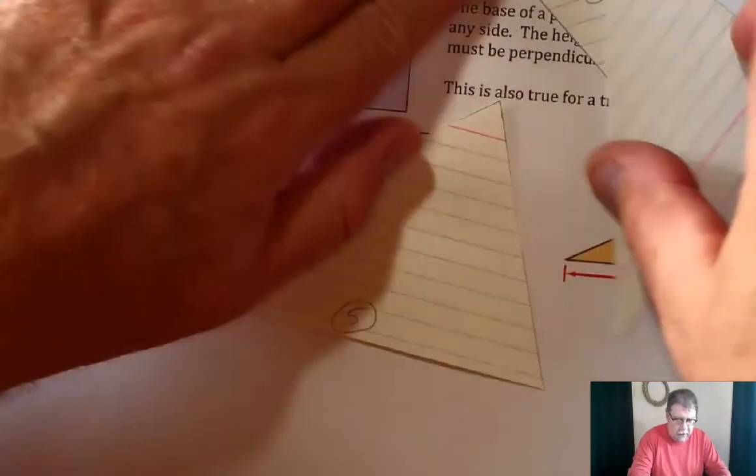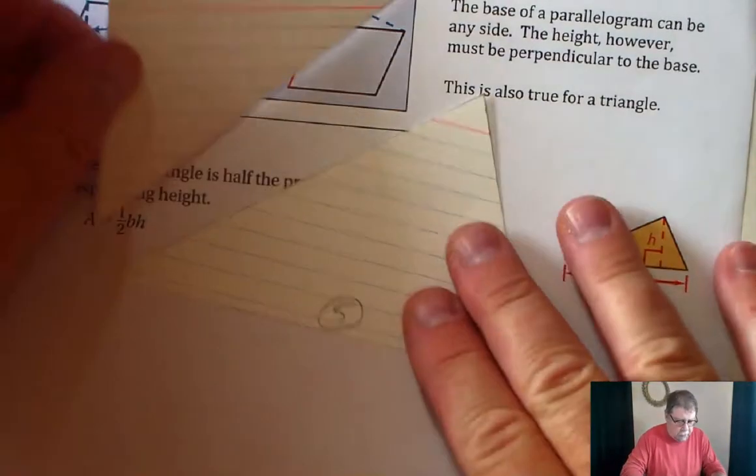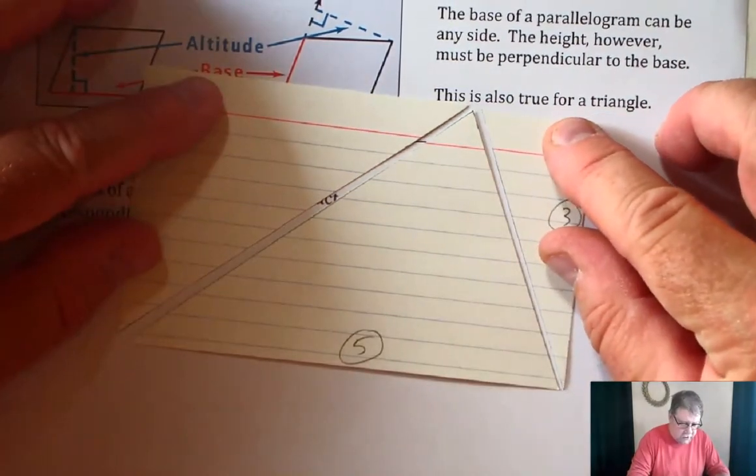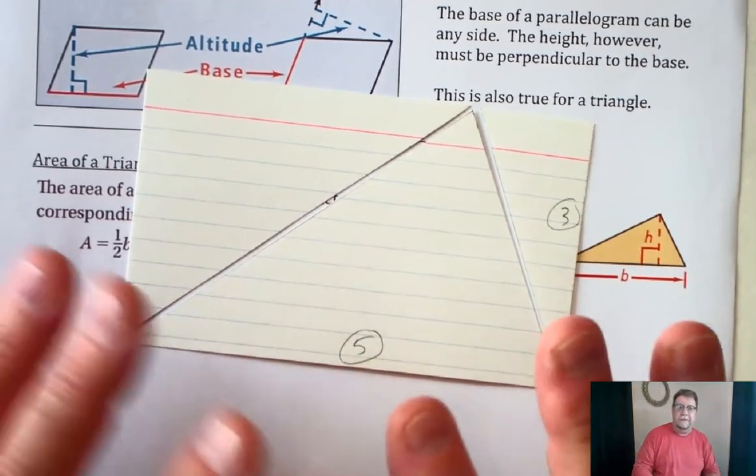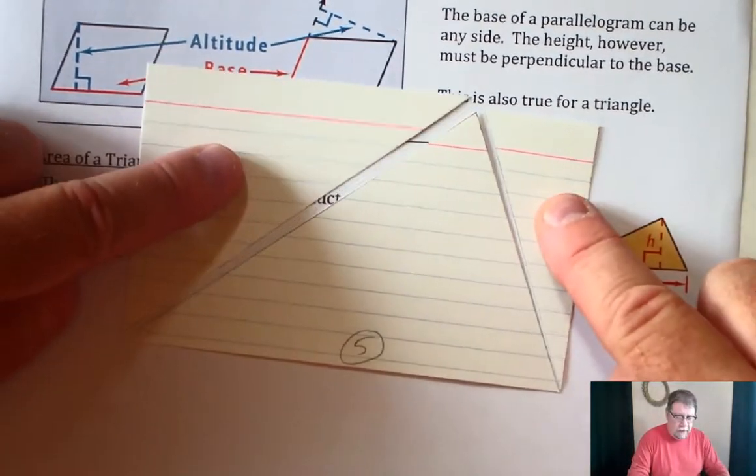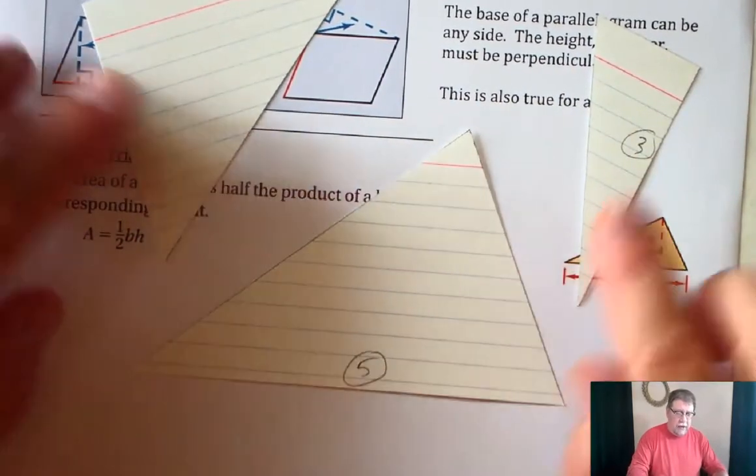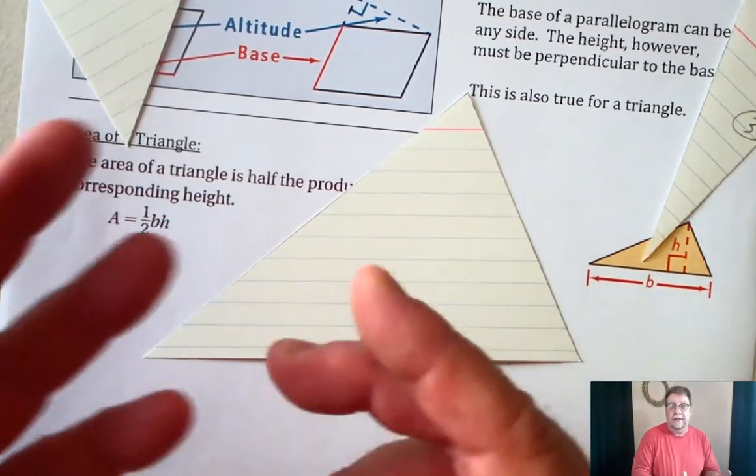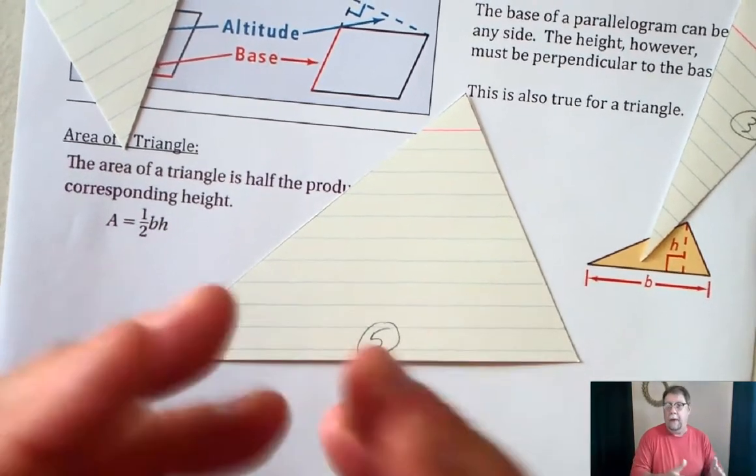So I now have, here's the card. Let me put the pieces back together. Here's the index card, which is three by five. That has an area of 15 square inches. If I remove these two pieces, I have a triangle. This triangle is obviously less than 15 square inches, but how much less?